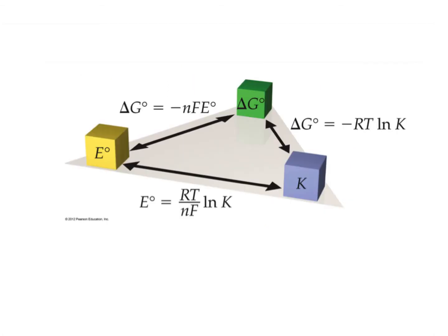This picture from our textbook nicely shows the triangular shape of all these relationships: delta G can be solved for cell potential using one formula, or delta G can be solved for equilibrium constant using another formula, or you can relate equilibrium constant and cell potential using the formula we just outlined. We have two of these three on our formula sheet, but not the one across the bottom — just set the two equal to each other and solve. Make sure you know how to find them on your formula sheet to use them on the AP test.